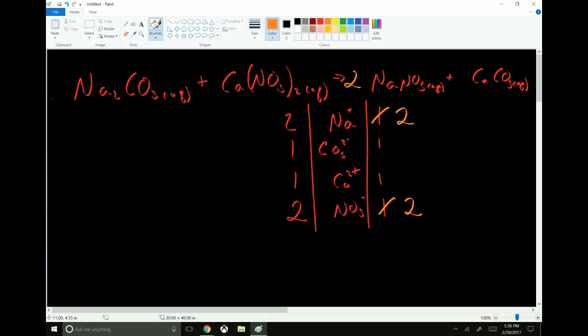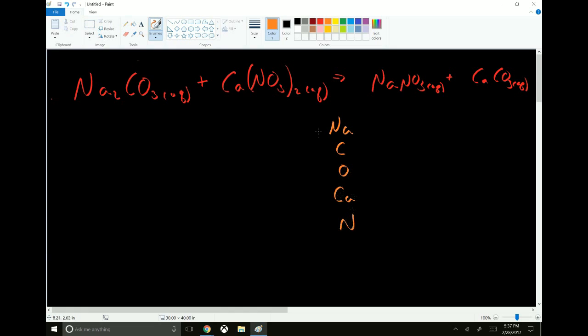You don't have to do it this way. If you want, you can keep track of the individual atoms without having to think about the ions at all. So for example, we have sodium, carbon, oxygen, calcium, and nitrogen. That starts us off with 2, 1, 3 plus 6 makes 9, calcium is 1, nitrogen is 2.